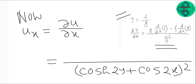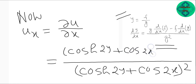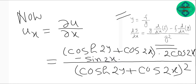So the differentiation of u with respect to x: in the denominator we have g squared, that is (cosh(2y) plus cos(2x)) squared, and in the numerator we have g times the derivative of f minus f times the derivative of g. Since we differentiate with respect to x, any function of y is treated as a constant, so cosh(2y) is constant. Therefore the derivative of g is 0 plus minus 2·sin(2x).